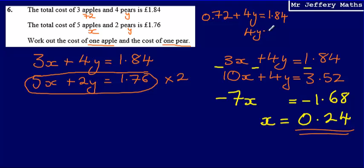Then 4y will be equal to £1.84 minus 72p, which is going to give me £1.12. And then that means that y will be equal to £1.12 divided by 4, which is going to give me 0.28, so 28p.